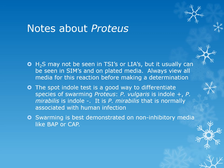The spot indole test is a good way to differentiate Proteus vulgaris from Proteus mirabilis — vulgaris is indole positive, mirabilis is indole negative. Proteus mirabilis is usually the species associated with human infections. Swarming is best demonstrated on non-inhibitory enriched plates like blood agar or chocolate agar. The spot indole test works like the oxidase test: apply indole reagent to filter paper, smear the organism, and a bright aqua blue color indicates a positive result.